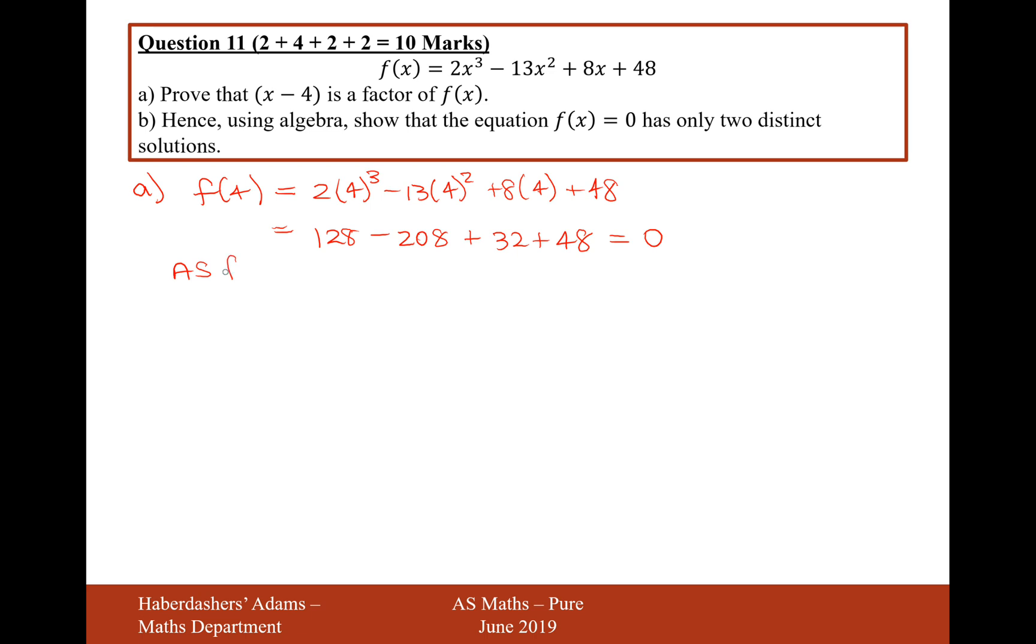Then we'll write our little conclusion. As f of 4 equals 0, by the factor theorem, x minus 4 is a factor of f of x. There we are. That's the answer to part A.